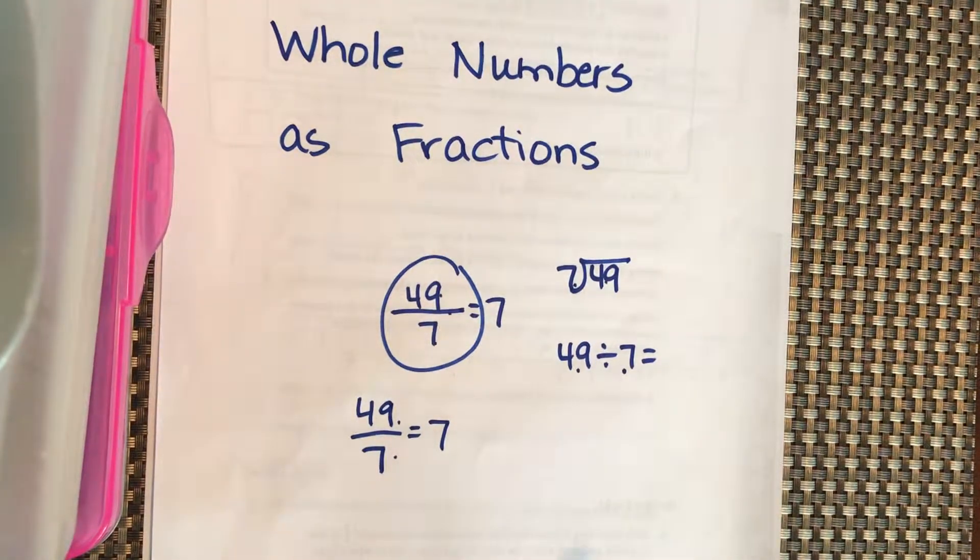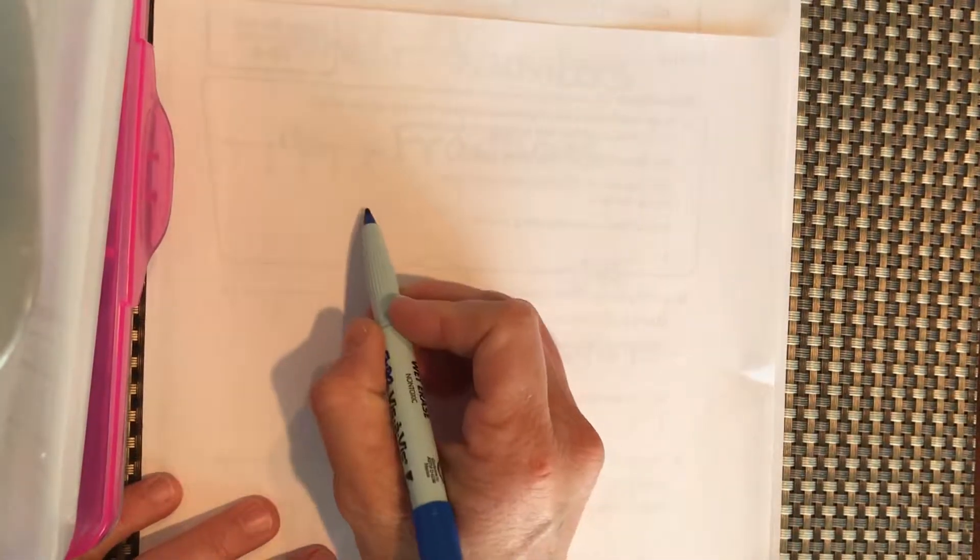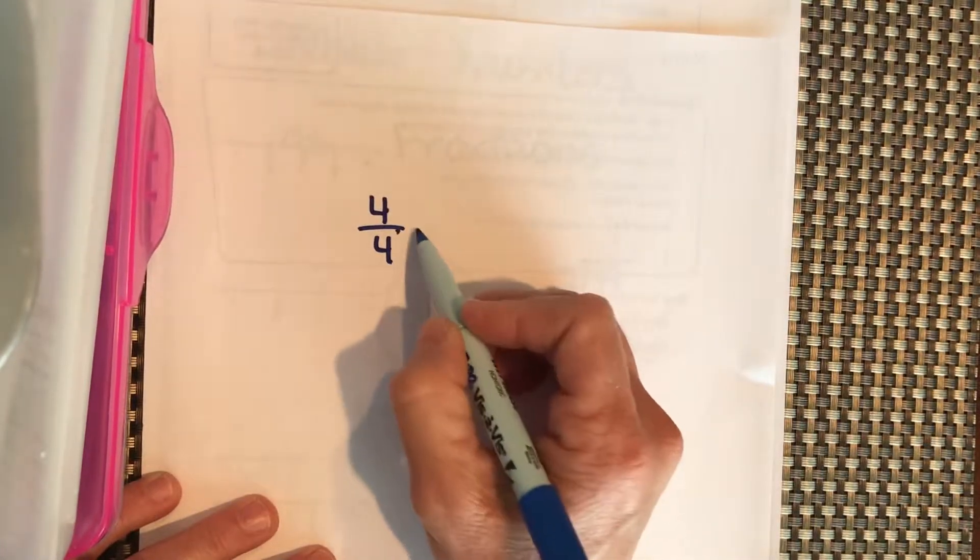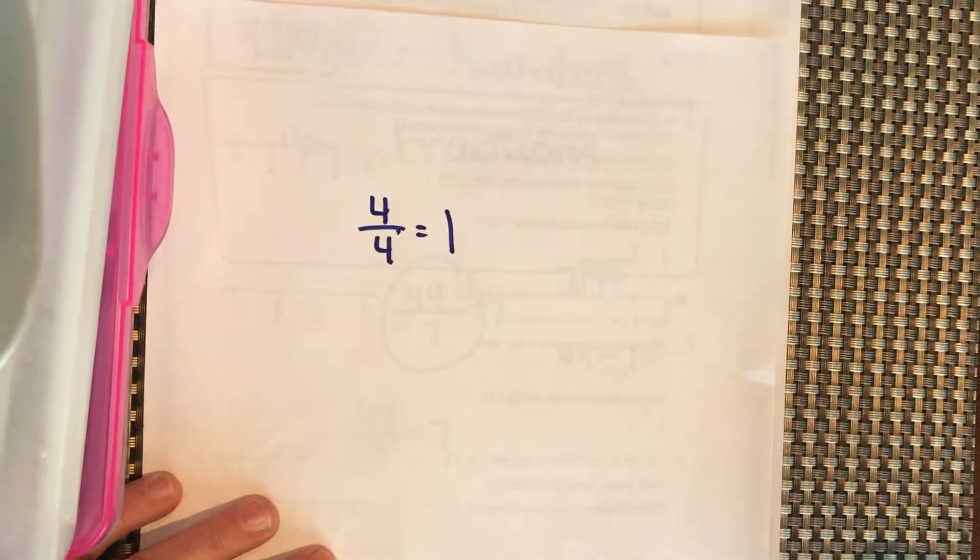If we have whole number 1, we say that's 4 fourths. What is 4 divided by 4? Whole number 1.